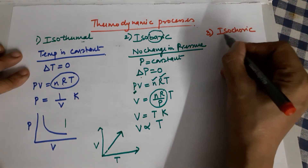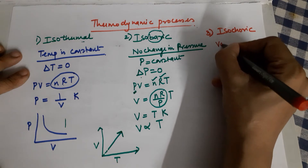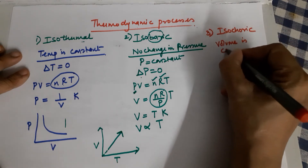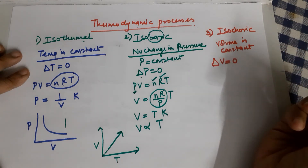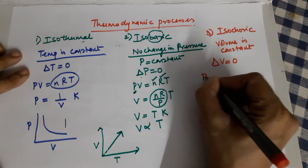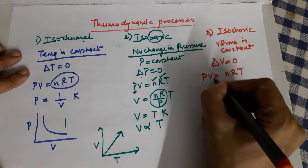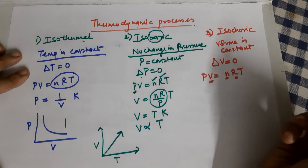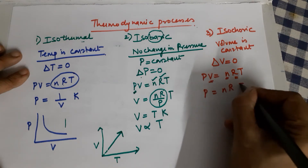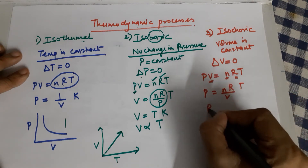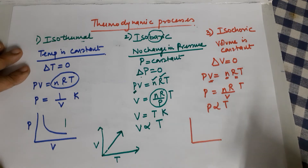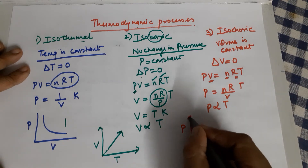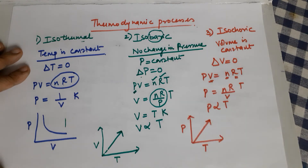The third process is isochoric, where the volume of the system is constant — delta V equals zero. For PV = nRT with V, n, and R constant, P = (nR/V) × T, meaning P is directly proportional to T, as in Gay-Lussac's law. The graph has P and T directly proportional, a straight line through the origin.